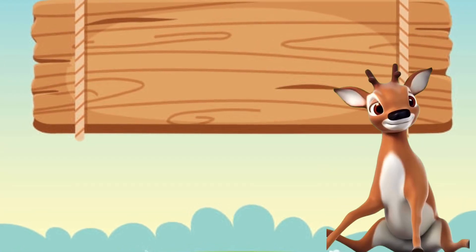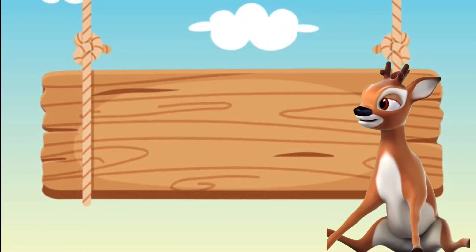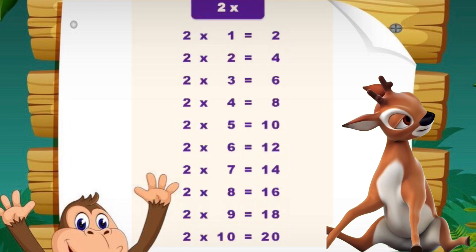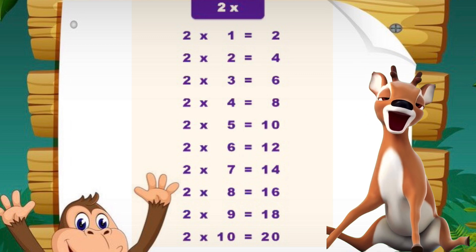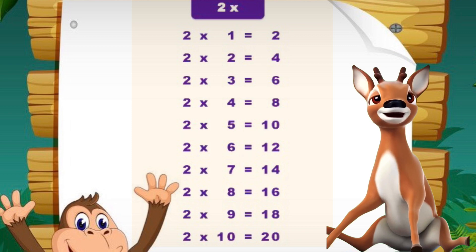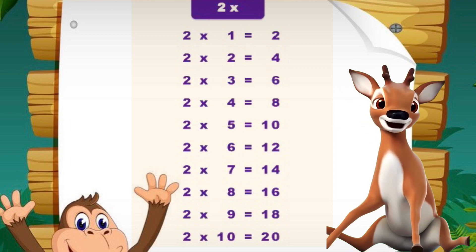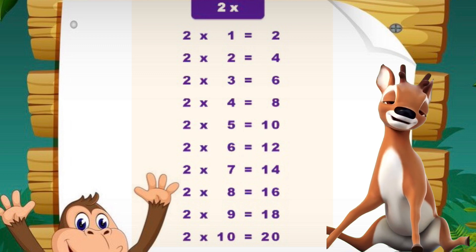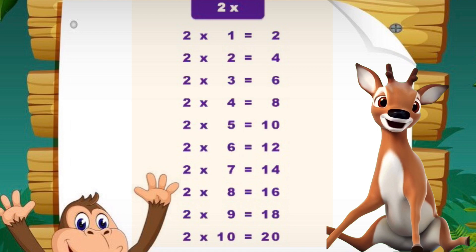Hello, dearie is back. Now learn the table with me. Two ones are two. Two twos are four. Two threes are six. Two fours are eight. Two fives are ten. Two sixes are twelve. Two sevens are fourteen. Two eights are sixteen. Two nines are eighteen. Two tens are twenty.